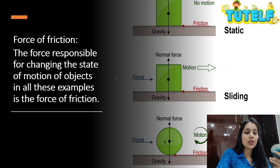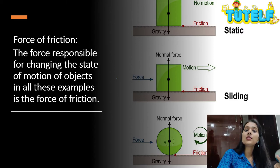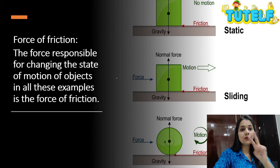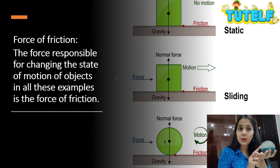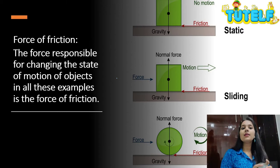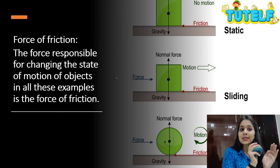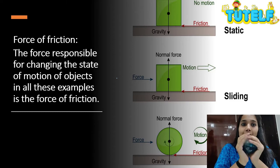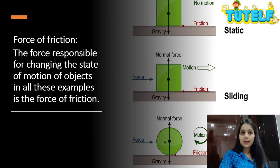The force of friction is of three types: static, sliding and rolling — we will be learning about it in the next chapter. These two forces — muscular force and force of friction — are contact forces, because the interaction is between my hand and the ball, or between my muscles and the ball. There is contact.